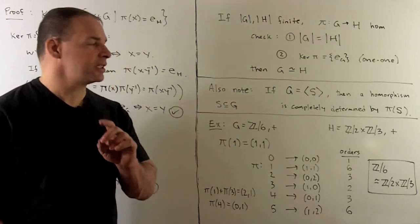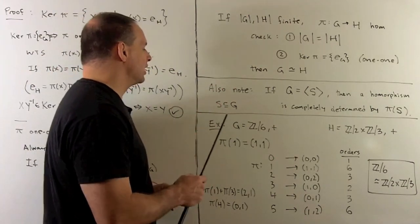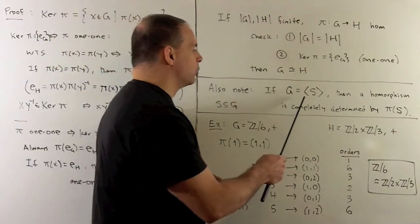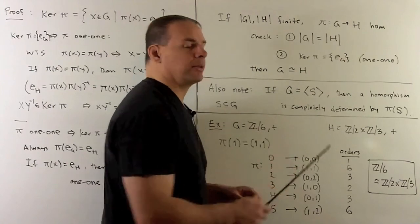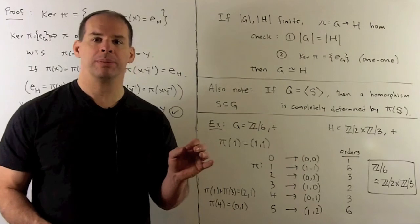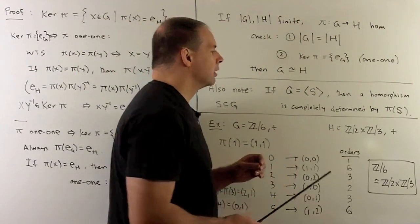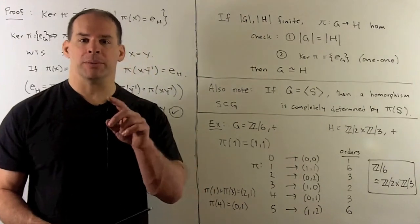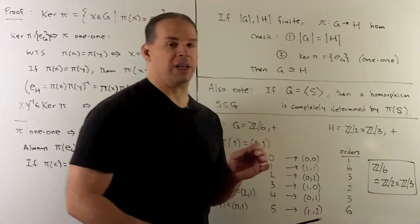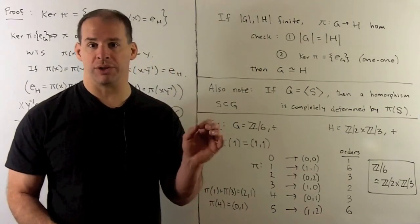Another useful fact: suppose I have a generating subset S of G — meaning if we take all elements of S, all their inverses, and all possible products, we get all of G back. If I have a homomorphism and I know the values on S, this generating subset, then I can reconstruct the entire homomorphism.